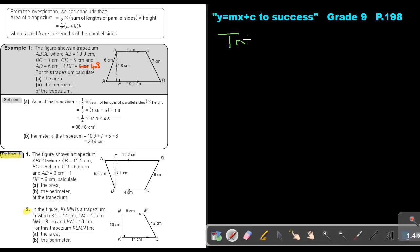Let's start. Try Now 1, and we are going to do number 2. Let's start. In the figure, KLMN is a trapezium,